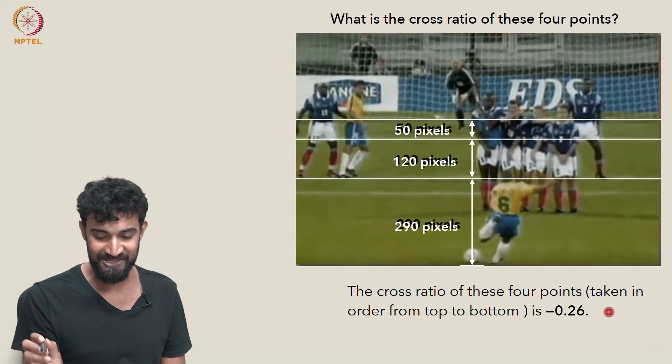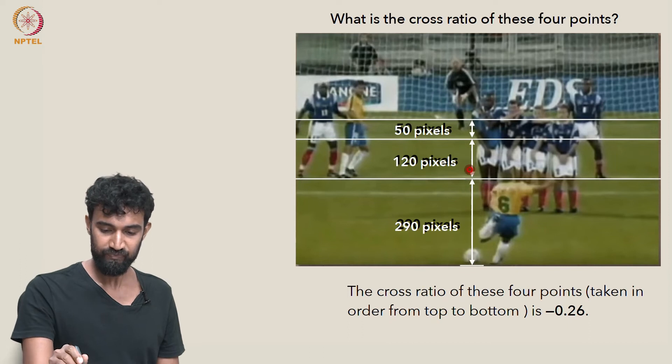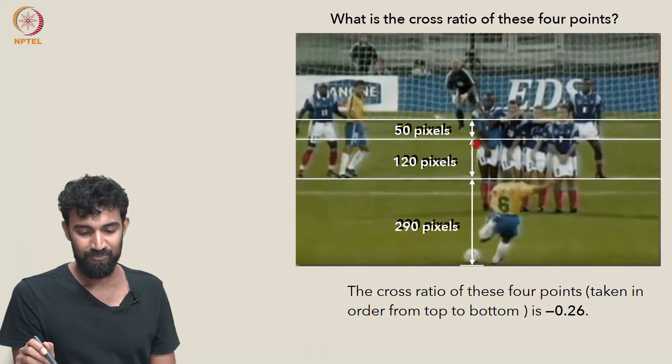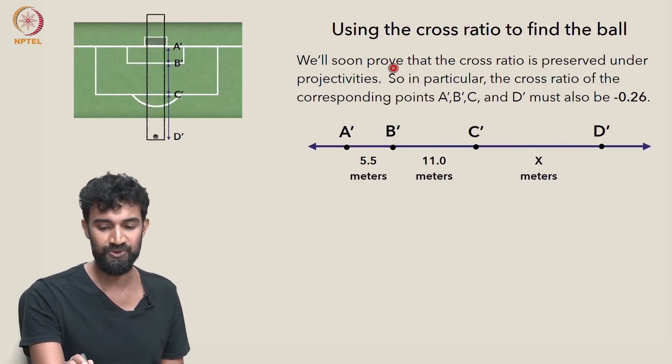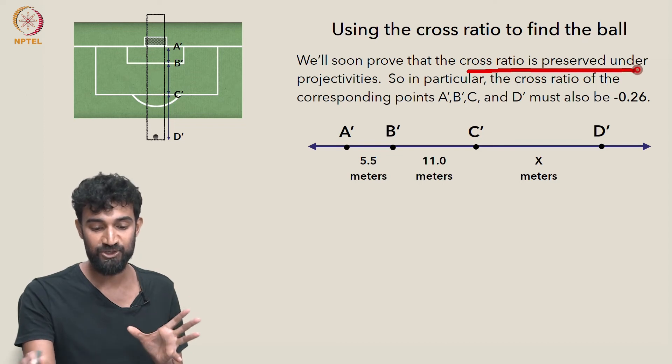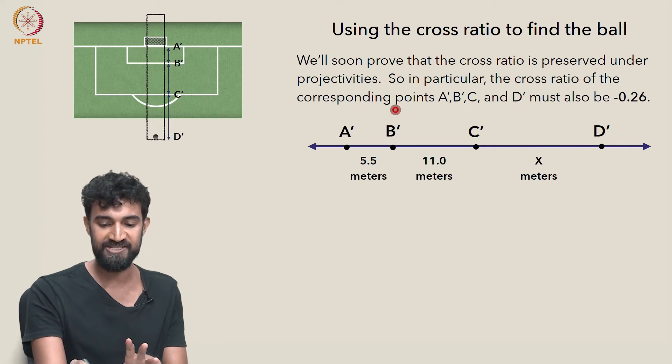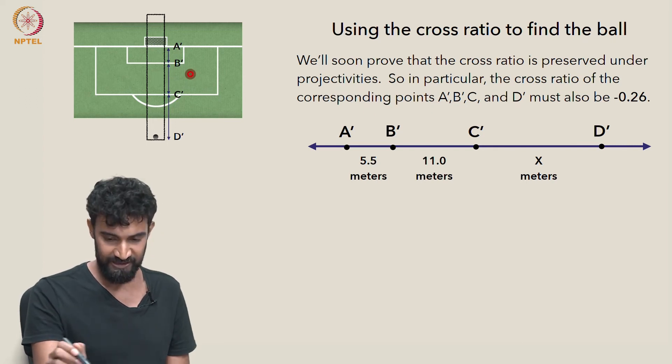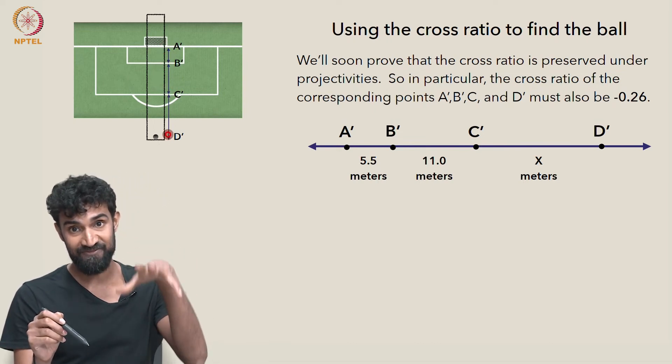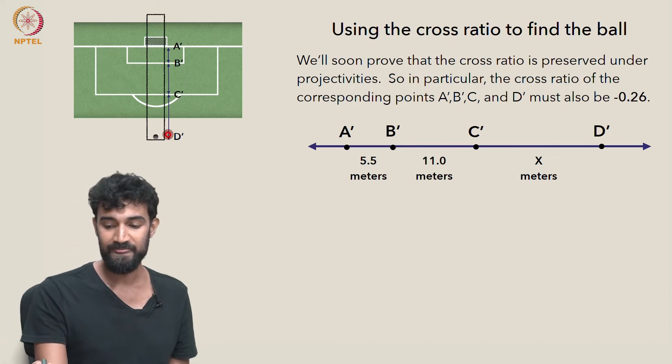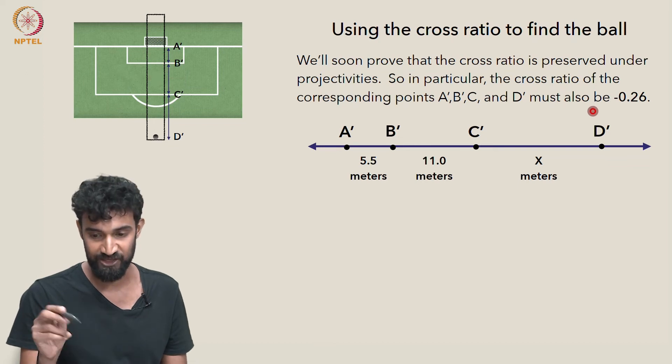Well, the way it's going to help us is that, okay, we get this number based on the ratios of these lengths. And this is just from the pixels. But we're going to prove soon that the cross ratio is preserved under projectivities. So the cross ratio of the corresponding points, A prime, B prime, C prime, and D prime, from that aerial bird's eye view of the football ground, that's also got to be negative 0.26. It's preserved. It's invariant under changes in perspective.